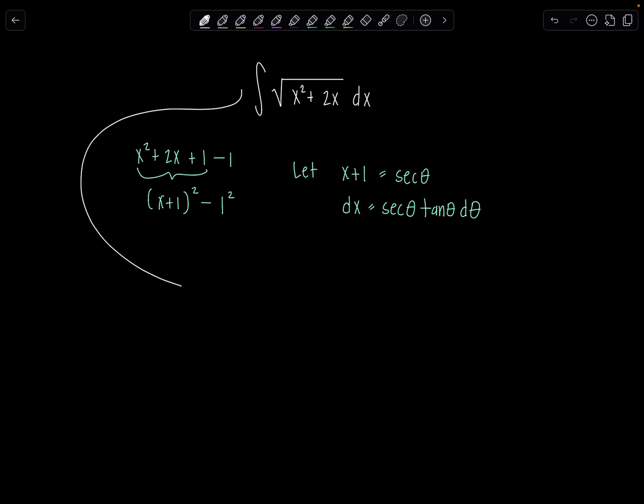Okay, so back to the integral. Let's rewrite everything all in terms of theta now. If you want to remind yourself really quickly, instead of x squared plus 2x under the radical, now we have x plus 1 quantity squared minus 1 dx. So then we have integral square root x plus 1 quantity squared is going to be secant squared theta minus 1.